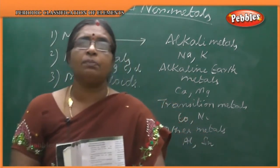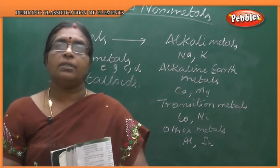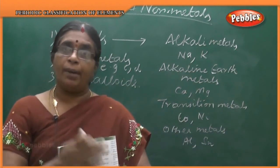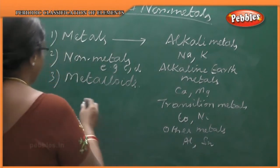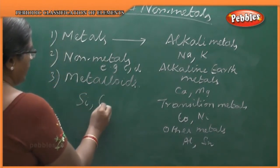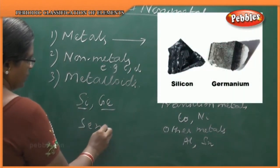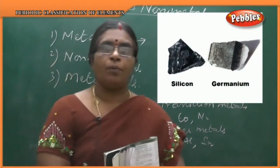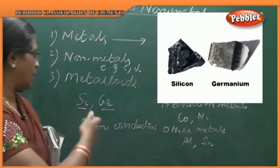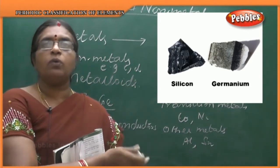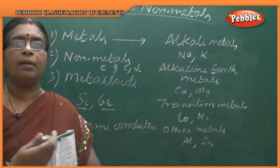There are certain elements which resemble both metals and non-metals — they are called metalloids. They have properties of both metals and non-metals. Examples are silicon and germanium. These are very good semiconductors. So the main divisions of elements are metals, non-metals, and metalloids.